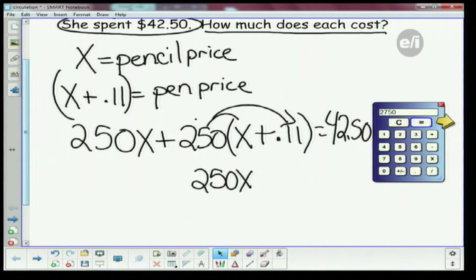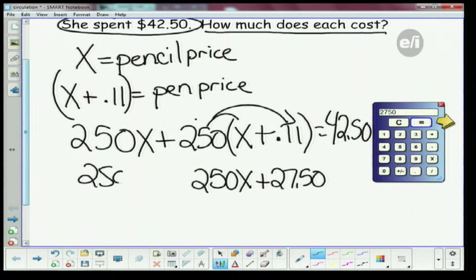So I get 27.50 - 27 dollars and 50 cents. I forgot to put my decimal in there, but trust me, it's 27 dollars and 50 cents.